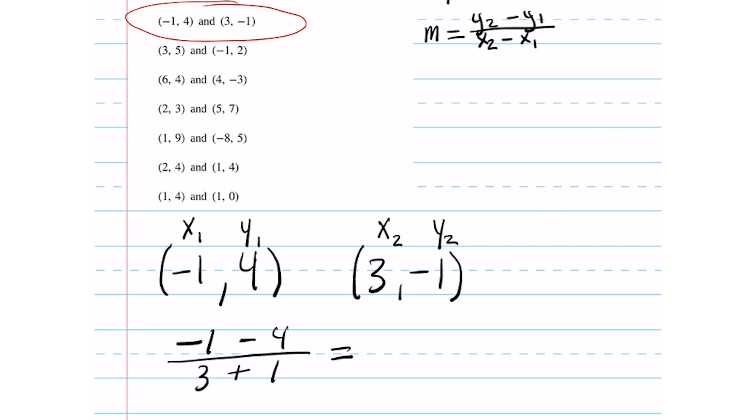After simplifying, we see that we're left with negative five over four, which of course is negative. And so again, the line is decreasing.